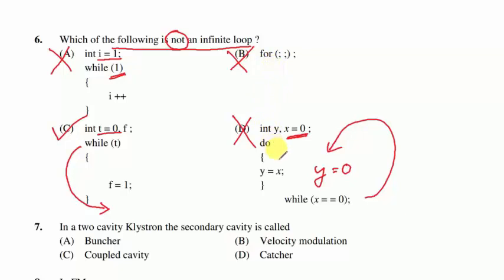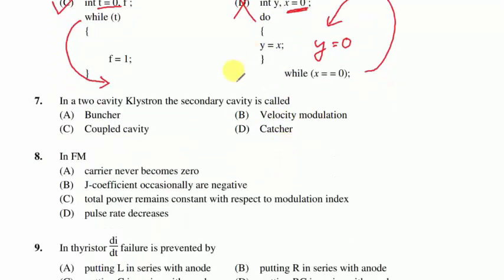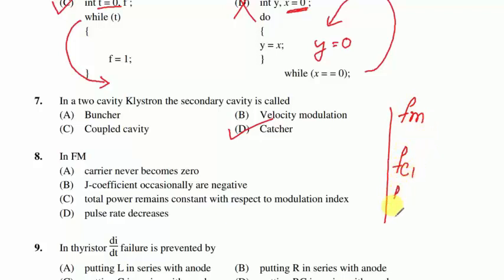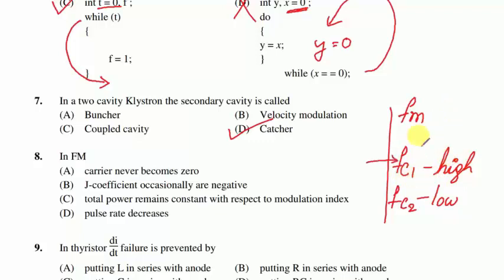Note: while and for loops are entry-controlled loops, whereas do-while is not an entry-controlled loop. Question 7: in a two-cavity klystron, the secondary cavity is the catcher and the primary cavity is the buncher. In FM, you have two carrier frequencies fc1 (high) and fc2 (lower); the carrier never becomes zero.